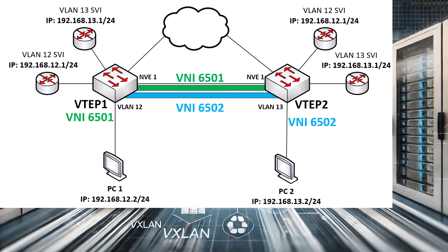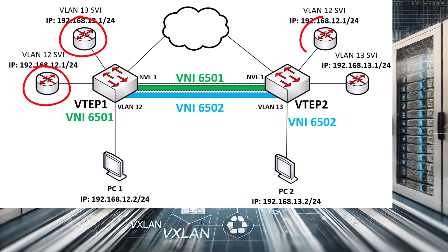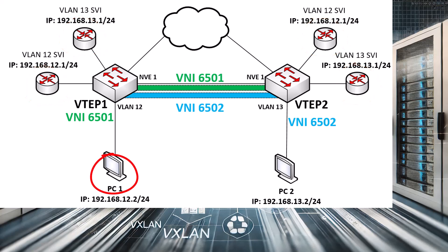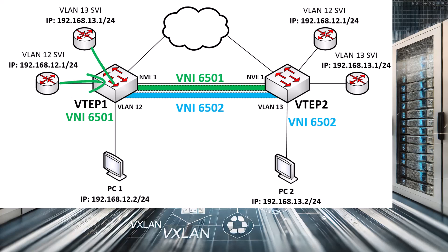To see what this means practically, we can take a look at this diagram. Here we have two VNIs, 6501 and 6502. We have a couple of SVIs configured at each VTEP, and they are using Anycast IP addresses. When PC1 wants to send a packet to PC2, it sends it to the default gateway, which is the SVI here. At VTEP1, both bridging and routing will take place. The packet is routed, and inter-VNI routing will forward that packet from SVI VLAN 12 to SVI VLAN 13.